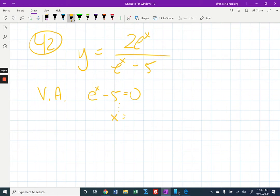And then the answer that you get, you're supposed to make sure that the numerator is not zero. But the numerator is 2e to the x, which is never going to be zero. And so when you solve that, you'll get your vertical asymptote.